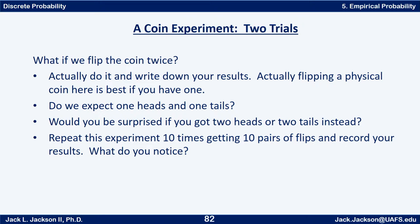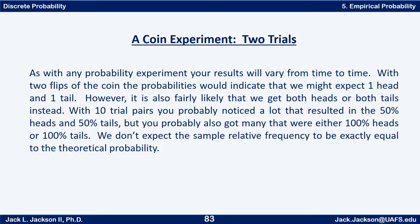Now repeat this experiment ten times — one experiment is two flips — so you'll get ten pairs of flips. Record your results and note what you observe. With any probability experiment your results will vary. With two flips, the probabilities suggest we might expect one head and one tail, but it's also fairly likely to get both heads or both tails. With ten trial pairs, you probably noticed many resulting in 50 percent heads and 50 percent tails, but also some that were 100 percent heads or 100 percent tails. We don't expect the sample relative frequency to be exactly equal to the theoretical probability.